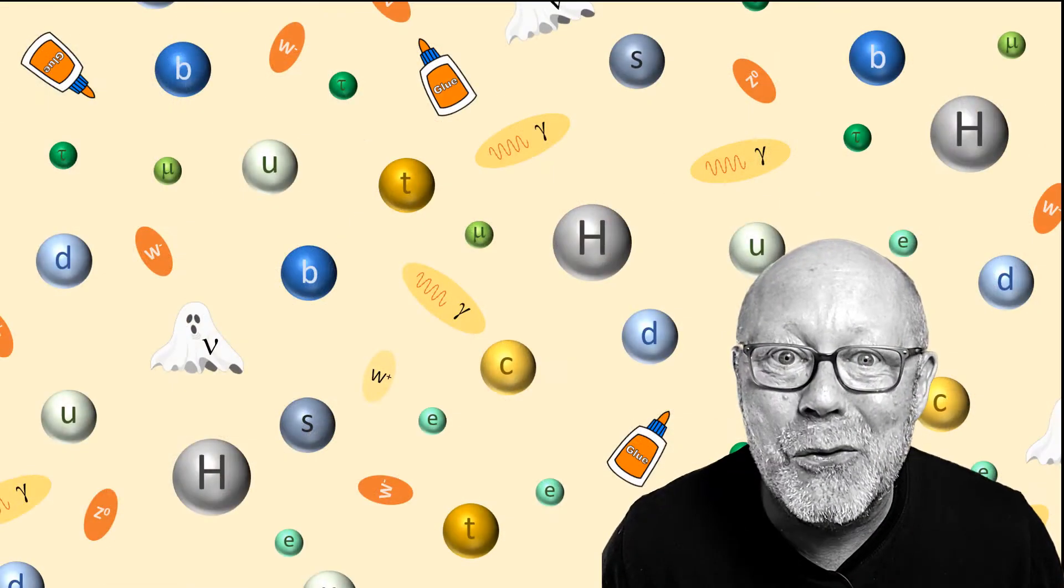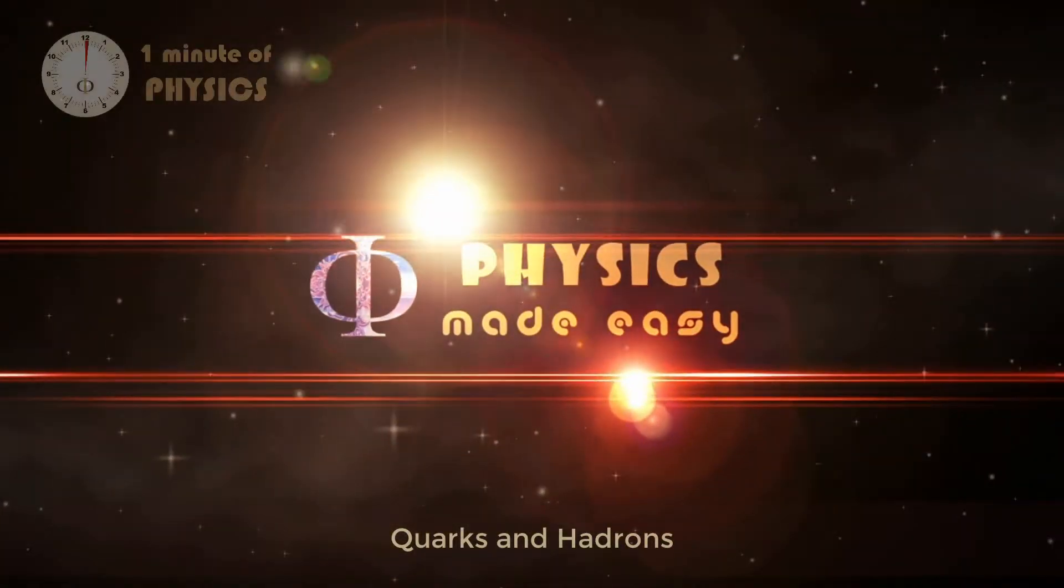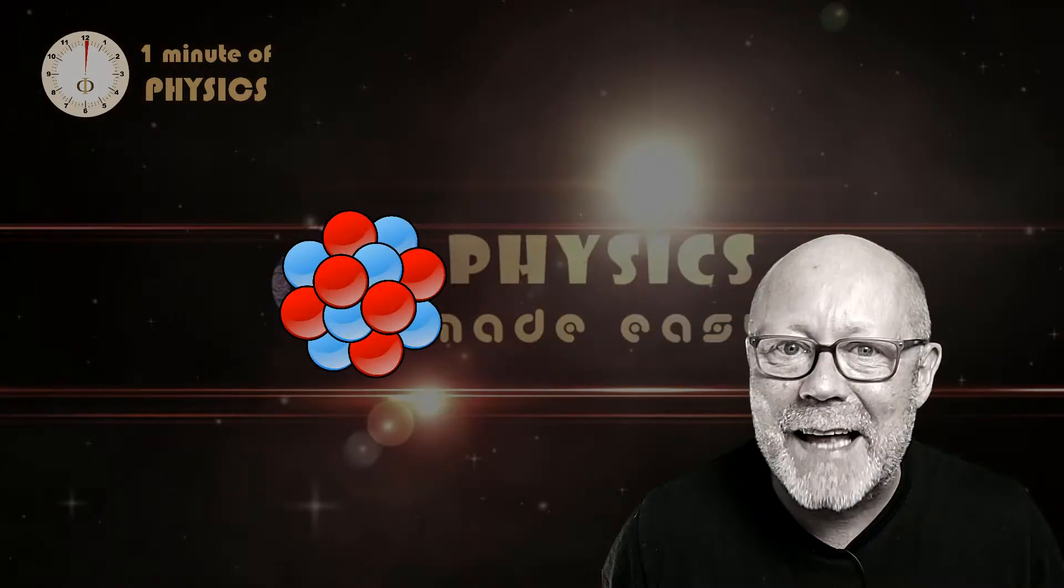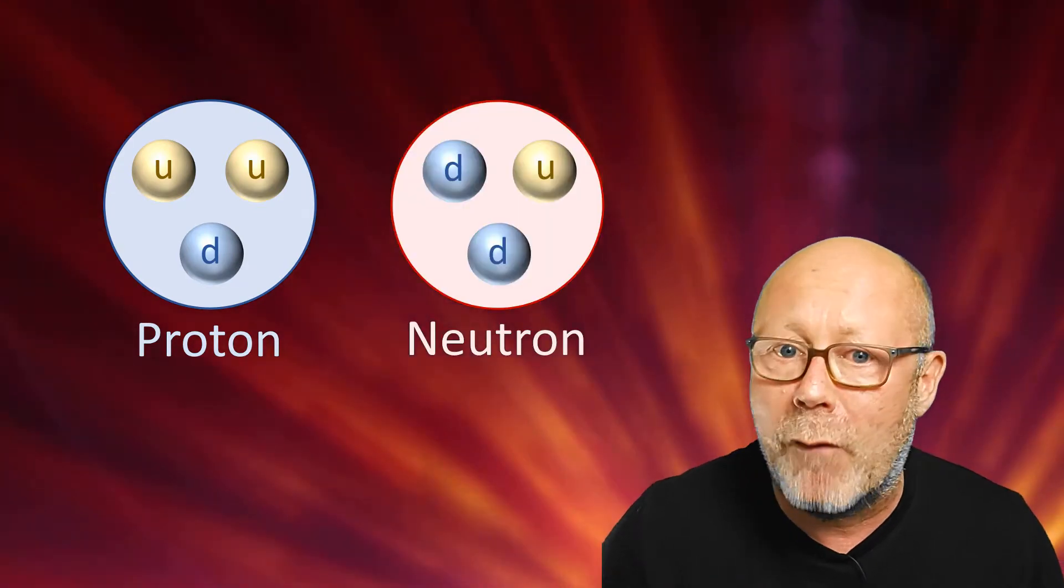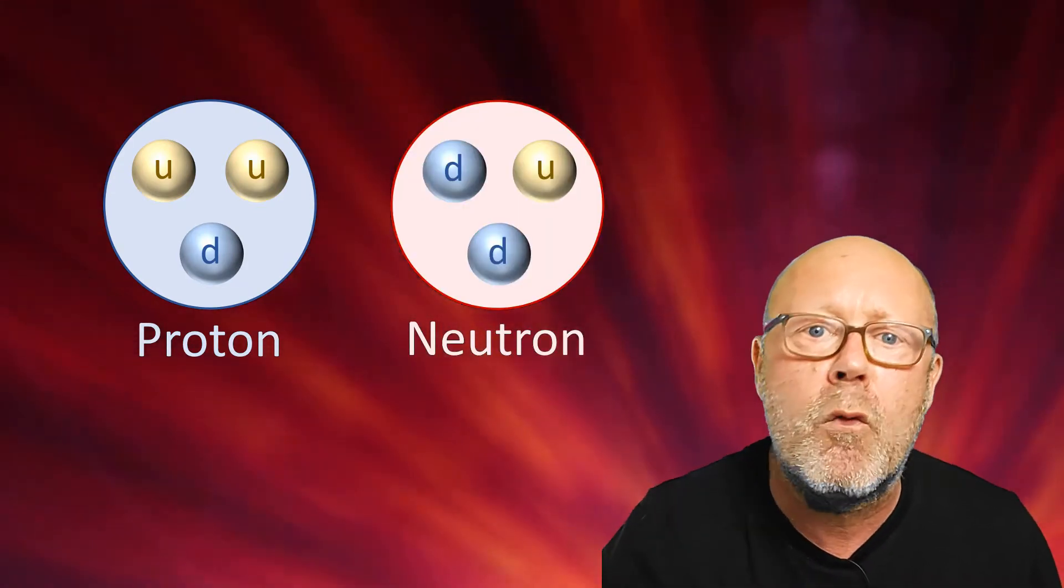Particle physics is a real zoo. The nucleus of an atom is made of protons and neutrons. The proton is made of two up quarks and one down quark. The neutron is made of one up quark and two down quarks.